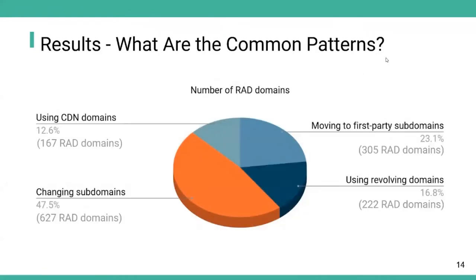We propose a taxonomy of domain-changing common patterns. The four categories consist of using CDN domains, moving to first-party subdomains, changing subdomains, and using revolving domains. Due to the time limit, we will focus on the category of moving to first-party subdomains, because this pattern is the most tricky one for the filter list community to block.